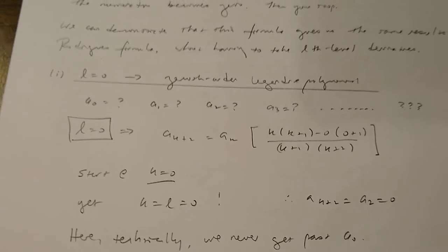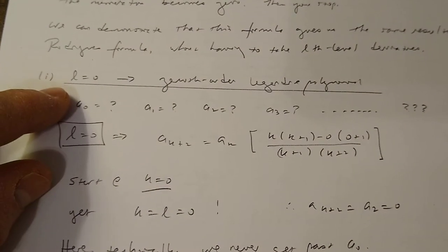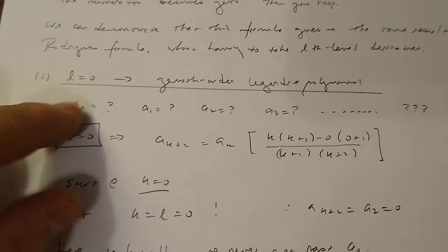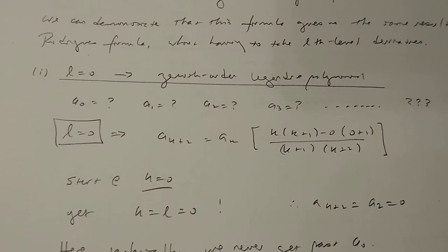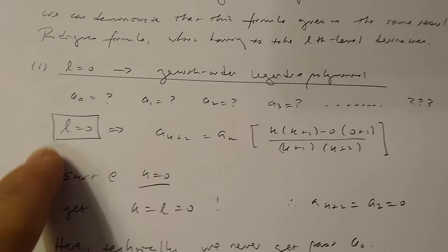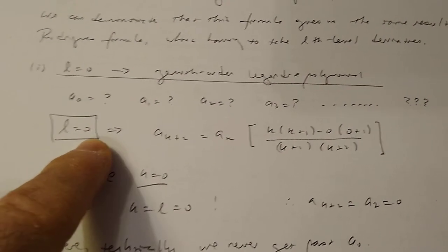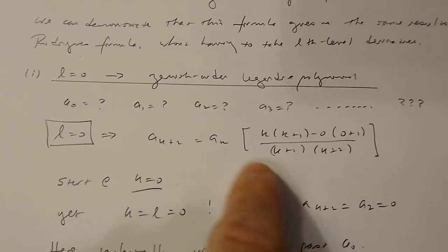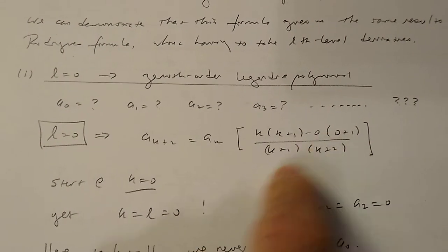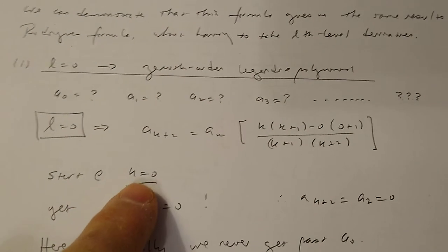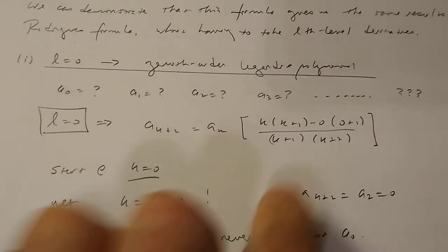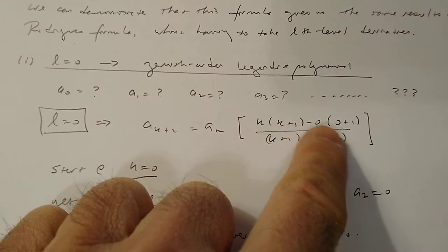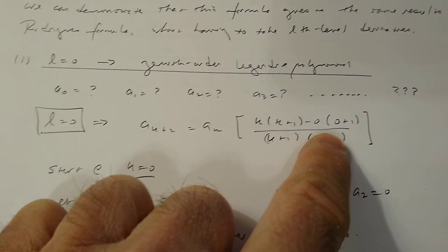Here's how you solve this. Let's say we're looking at the zeroth order Legendre polynomial — so l equals 0. We ask: what's my a₀, a₁, a₂, a₃, so I can build my polynomial? We have our recursion formula, we plug in what l is, and we start with k equals 0, then k equals 1, then k equals 2. Notice that when k equals l, that numerator goes to 0.